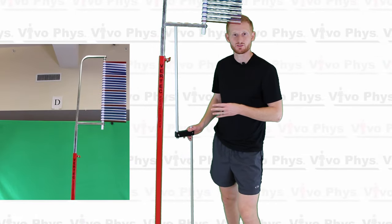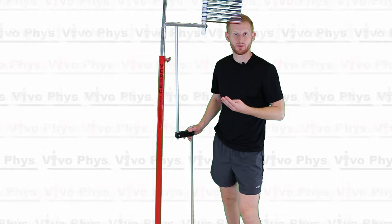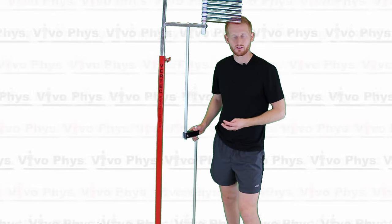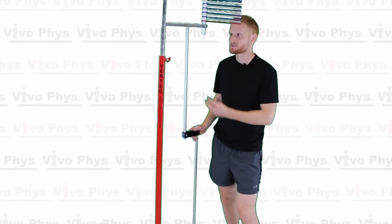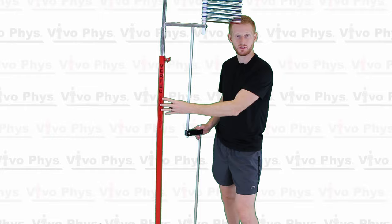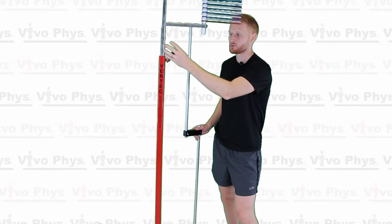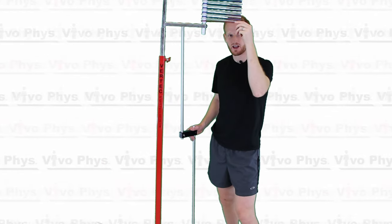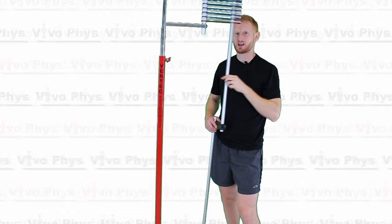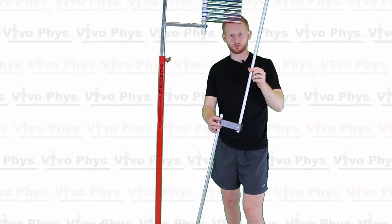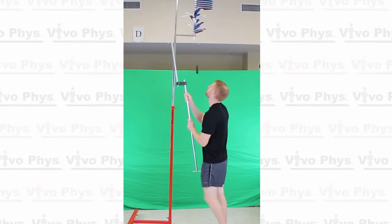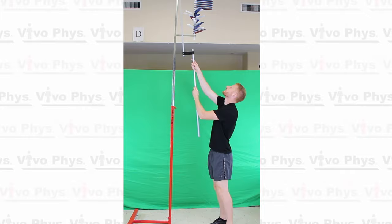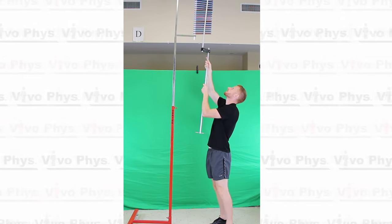A Vertec is used to measure someone's reach height as well as someone's jump height. Once all put together, the Vertec is essentially two pieces. It is this large piece that was assembled that has the different flags for actually measuring height, and it's going to have the rod that's used to straighten these flags back out. So when somebody's hit them, you use this to make it all straight again.